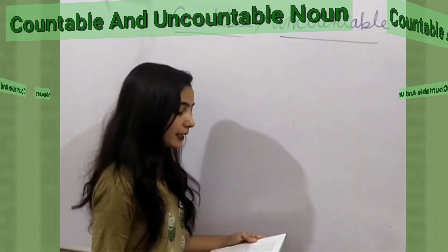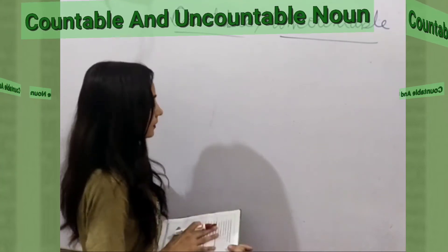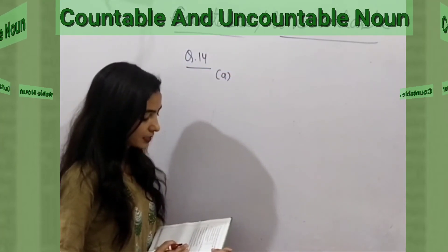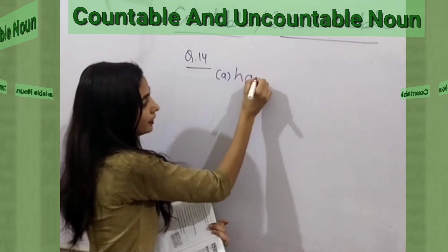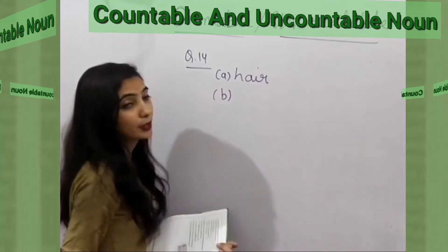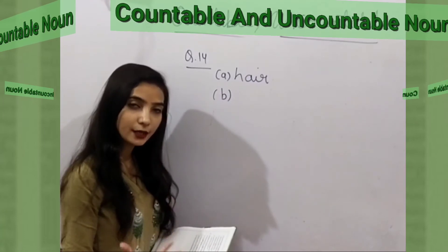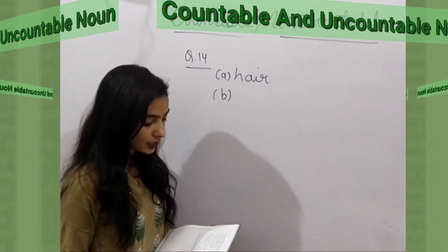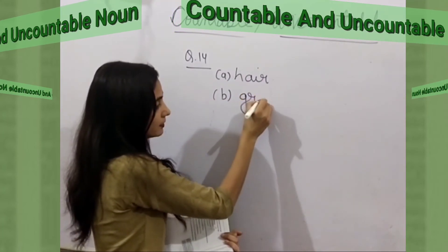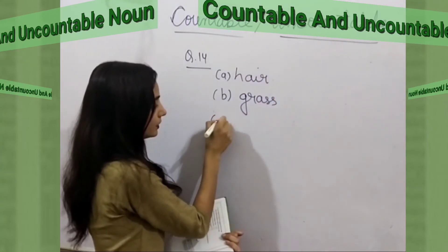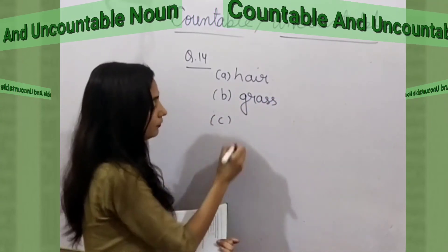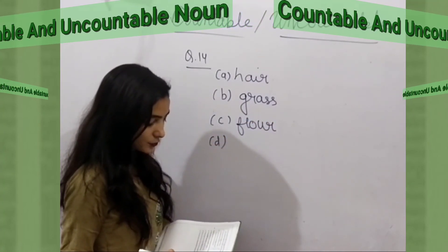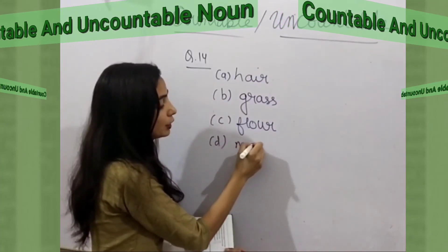Our last question, number 14: Underline the correct noun in each sentence. A: 'My mother has long hair' — not 'hairs,' because uncountable nouns cannot be written as singular or plural. B: 'The grass is green in color' — grass, not grasses. C: 'Please give me a bag of flour' — not 'floors.' D: 'He is a rich man, he has lots of money' — not 'monies.'